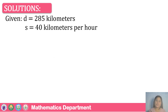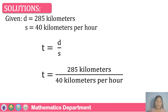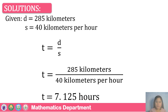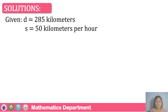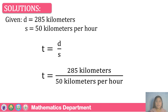For the speed of 40 kilometers per hour, substituting into the formula we have 285 kilometers divided by 40 kilometers per hour, giving a final answer of T equals 7.125 hours. For 50 kilometers per hour, substituting gives 285 kilometers divided by 50 kilometers per hour — canceling kilometers from numerator and denominator — giving a final answer of 5.7 hours.